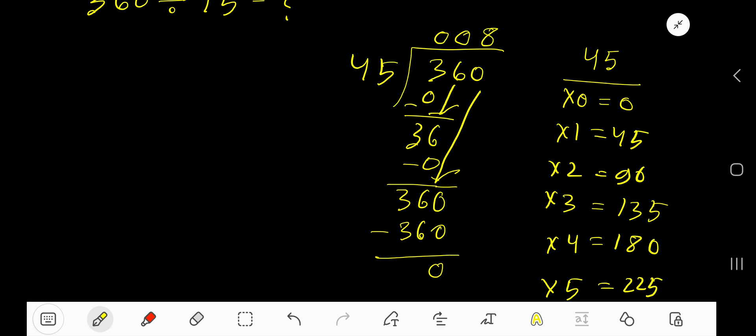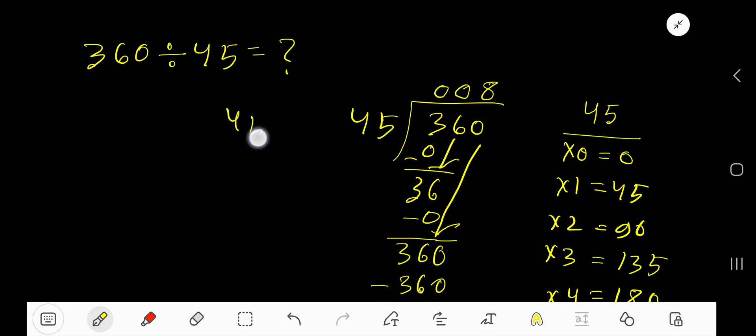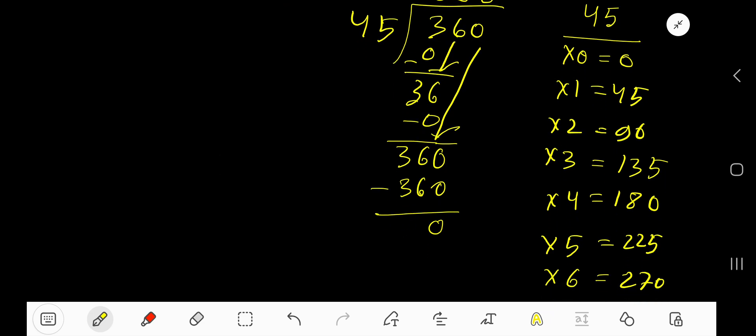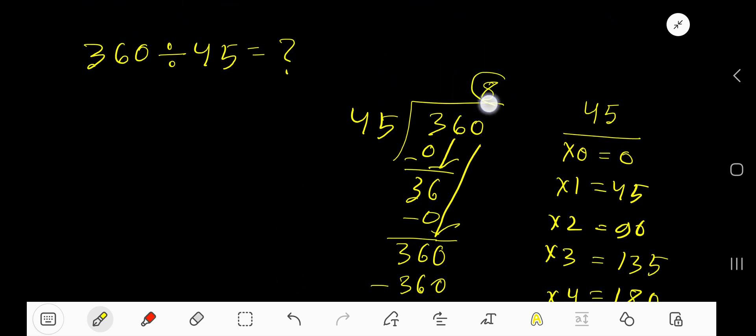Let me verify by multiplying 8 times 45. 8 times 5 is 40, write 0, carry 4 to the next column. 8 times 4 is 32, 32 plus 4 is 36. So 360, which is equal to 360. Our answer is 8.